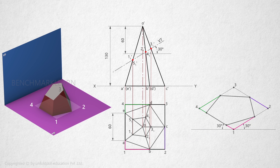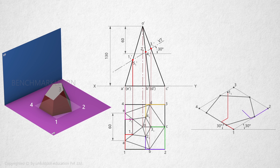To draw the isometric view of the section, we need to obtain the points 1-1, 2-1, 3-1, 4-1, and 5-1 on the isometric view. Take the horizontal distance of 1-1 from the top view and mark it on the isometric view. Measure the height and mark on the vertical drawn from the point to get 1-1. Take the horizontal distance of 2-1 and mark on the isometric view. Measure the height and mark on the vertical line to get 2-1.